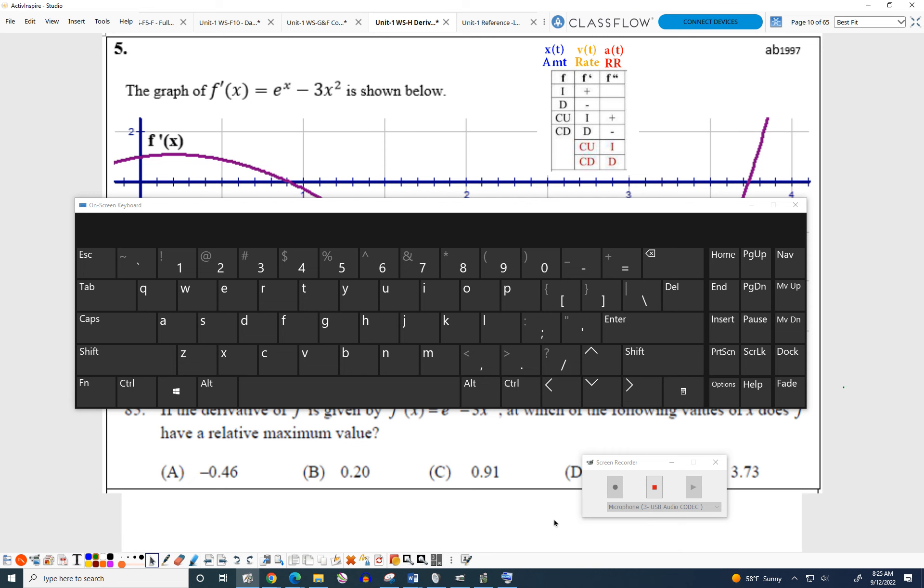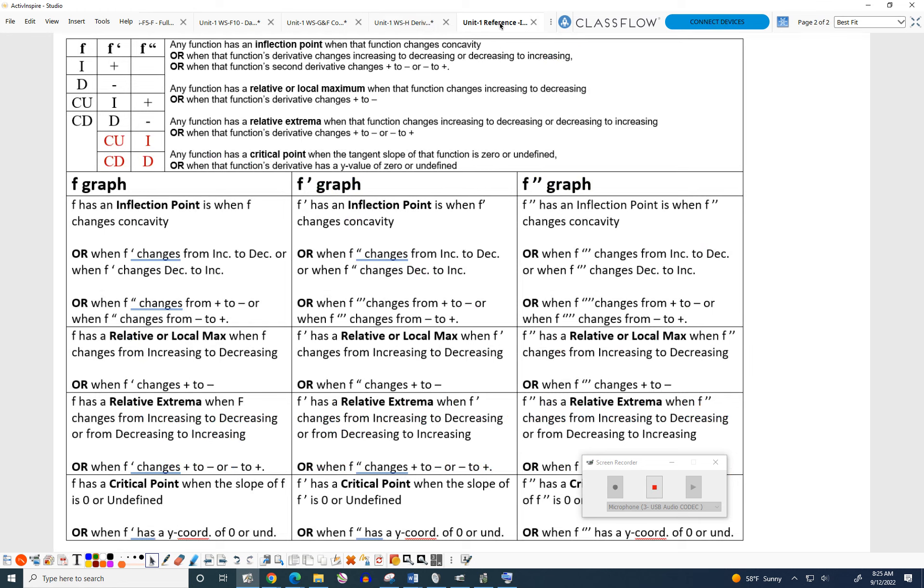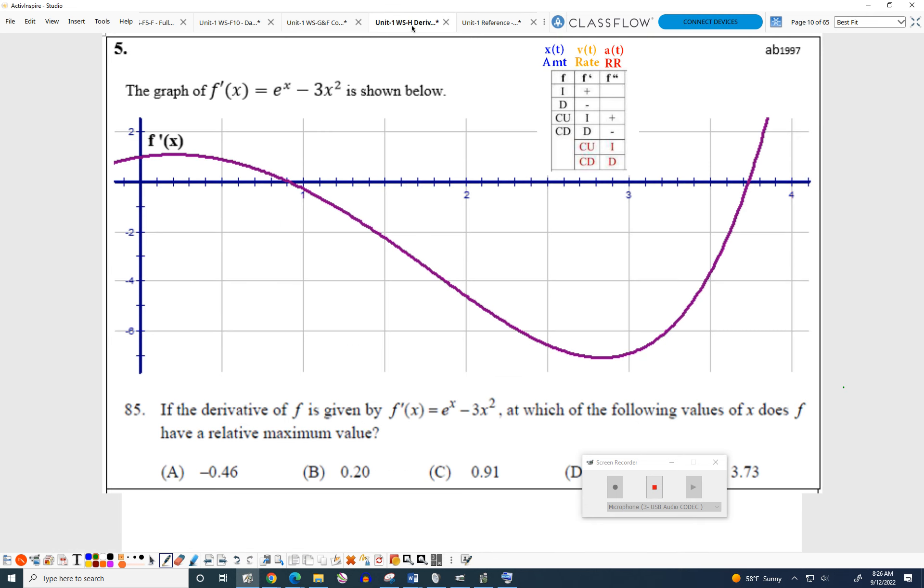Look at your salmon reference sheet and find this box right here. Find that box, and then use that box - find that box in green that I just circled - use that box to answer this question on the purple packet, and then show me your answer: A, B, C, D, E, or I don't know.